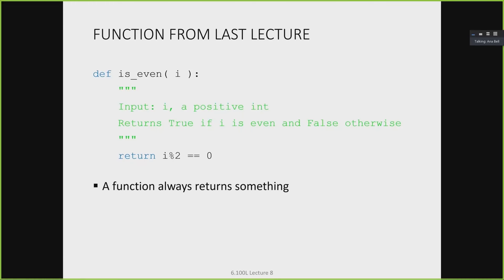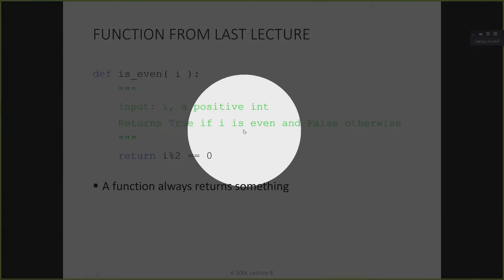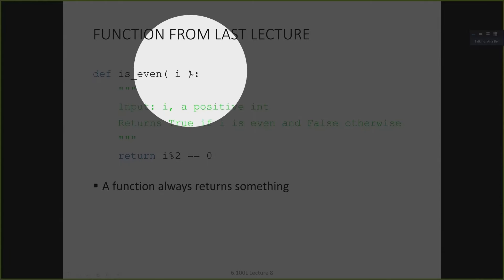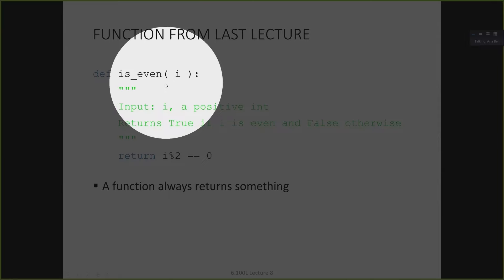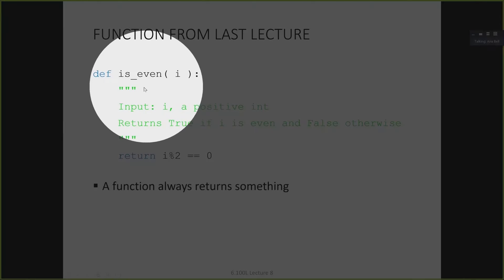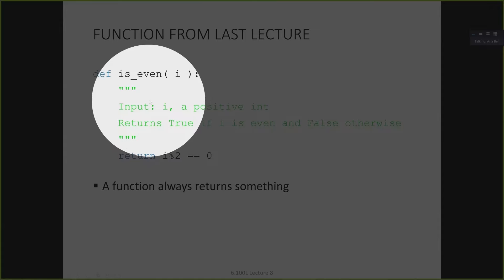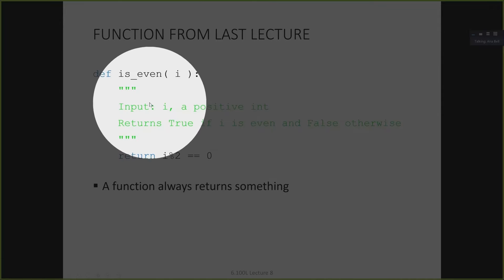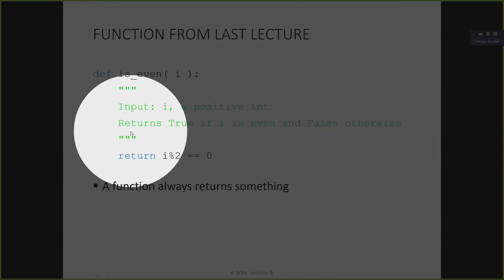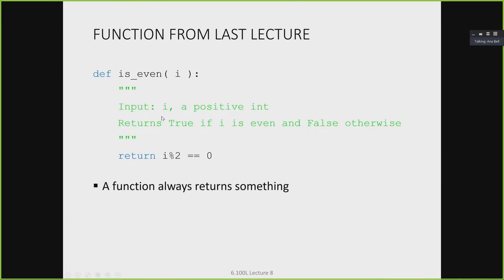Let's recall the example we talked about last lecture. We created this function `isEven`. The syntax for creating a function is basically the keyword `def`, which tells Python we're defining a function. We decide what name to give our function. Parentheses tells Python we're going to name all the arguments, all the inputs to the function. The colon starts the body of the function. The first part — not required, but should always be in there — is called the doc string, also known as a specification.